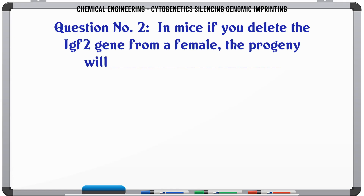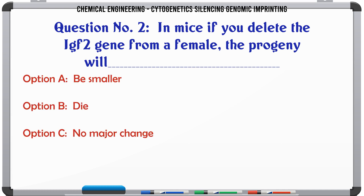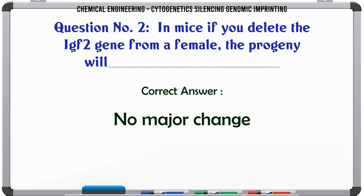In mice, if you delete the IGF-2 gene from a female, the progeny will: A. Smaller, B. Die, C. No major change, D. Larger. The correct answer is C: No major change.